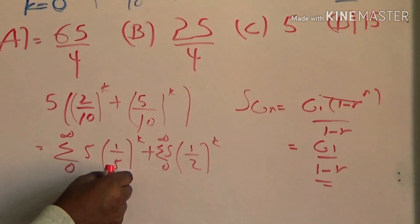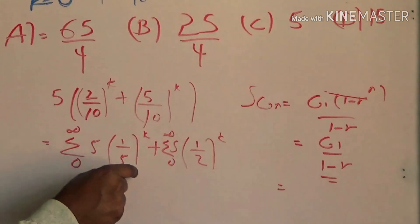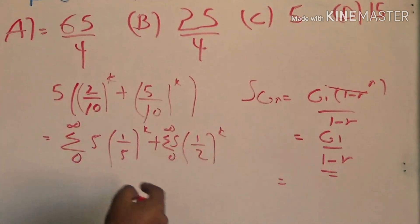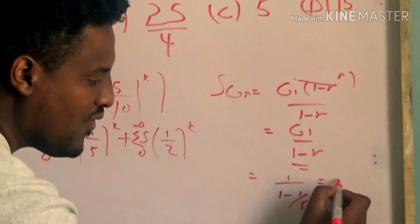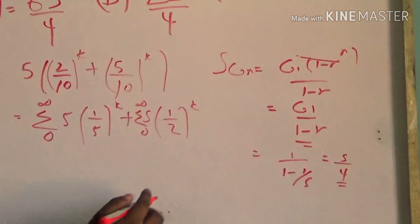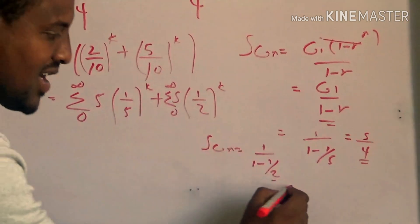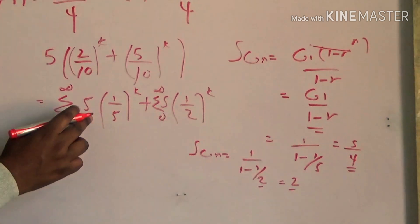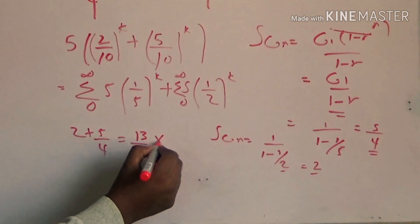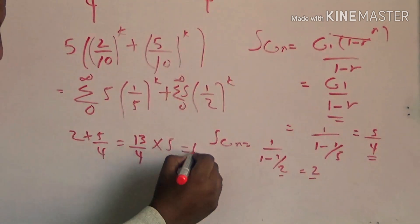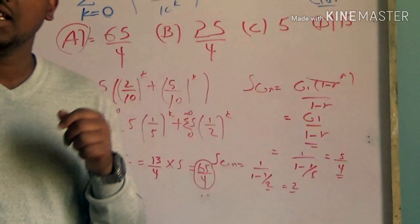If the geometric progression starts at G1, then the power of 0 is equal to 1, so G1 equals 1. The formula gives 1 over (1 minus R). Then 5 over 4 equals 1. Sj equals G1 over (1 minus R), which equals G1 over 2. The result is 2. Adding 2 plus 5 over 4 gives the sum.